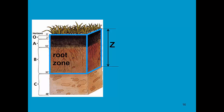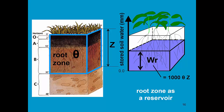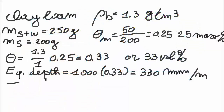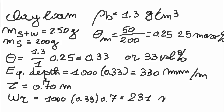We can also represent the root zone as a reservoir in which there is a certain amount of water. The volumetric water content in the root zone is theta, and the water content in the reservoir is 1,000 times theta times z, giving the stored soil water in the root zone. Assuming a rooting depth of 0.7 meters, the water content in the root zone will be 1,000 times 0.33 times 0.7, which equals 231 millimeters of water.